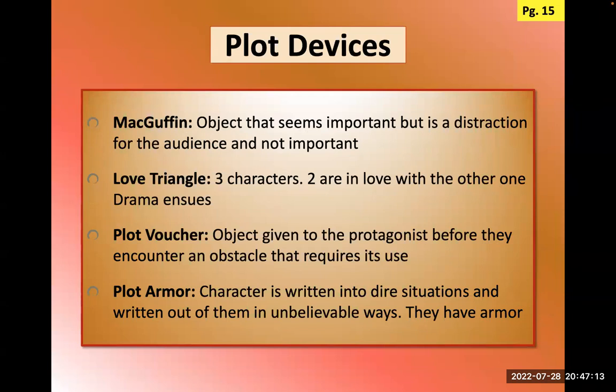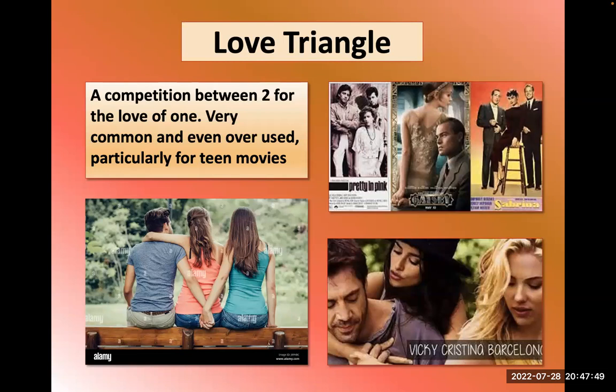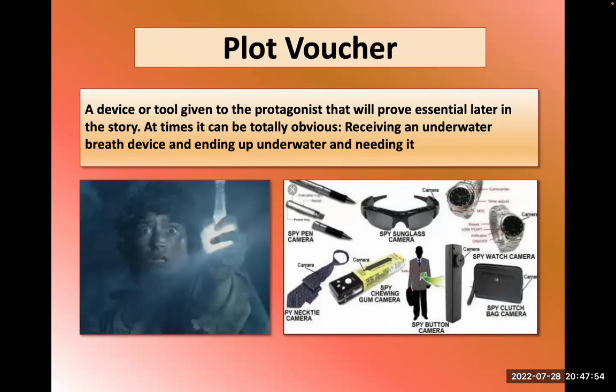More plot devices: the McGuffin is basically a distraction — a red herring. Something you think is important in a movie but isn't. A great example is the suitcase in Pulp Fiction — it shows up early, some characters try to get it, we think it's money, they never show it to us, and it never shows up again. The love triangle is just what it says: three people engaged in a triangle of competing love.